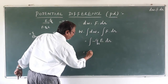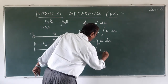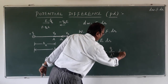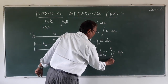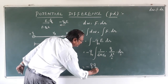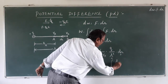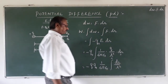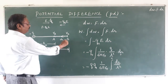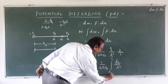Taking minus q₀ outside the integral, the electric field according to Coulomb's law is 1 upon 4 pi epsilon naught into Q upon r², giving us the integral of r to the power minus 2 dr. The lower limit is rB and the upper limit is rA, since we are moving the charge from point B to point A.